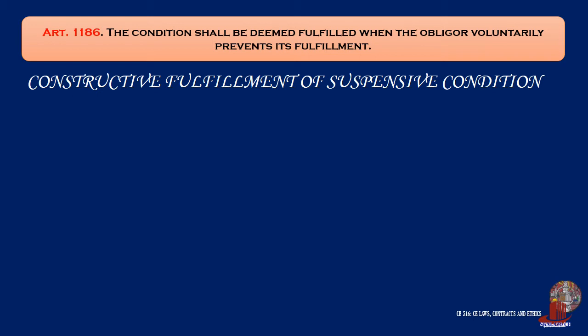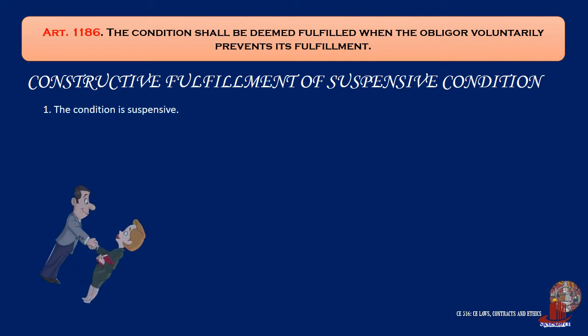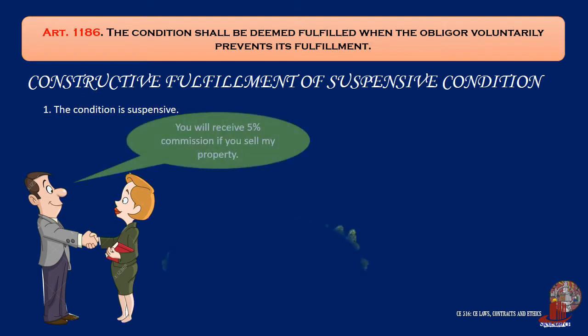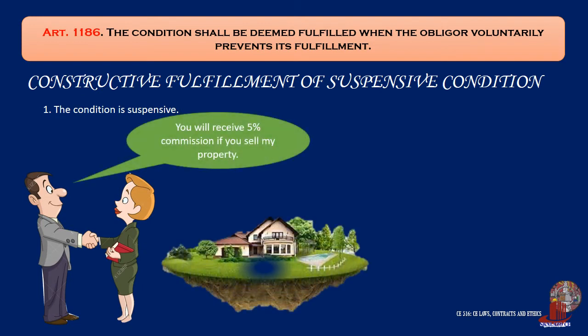He should not be allowed to profit from his own fault or bad faith. There are three requisites for the application of this article. The first one being the condition is suspensive. For example, an owner agreed to give a realty agent a 5% commission if the latter could sell the former's land at a certain price.